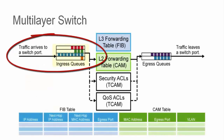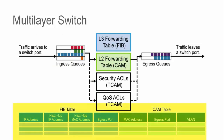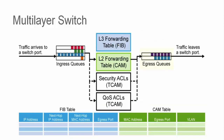Traffic going through a layer 3 switch will be pulled off an ingress queue which uses the CAM and TCAM to determine if the frame should be forwarded. If it meets the criteria to be forwarded, the next decision is to use the tables to determine where to forward the traffic. Finally, the QoS information will be used to determine if the traffic will be forwarded with certain priority and markings. After these processes are complete, the traffic will be placed in the egress queue and then transmitted to the next device on the network.